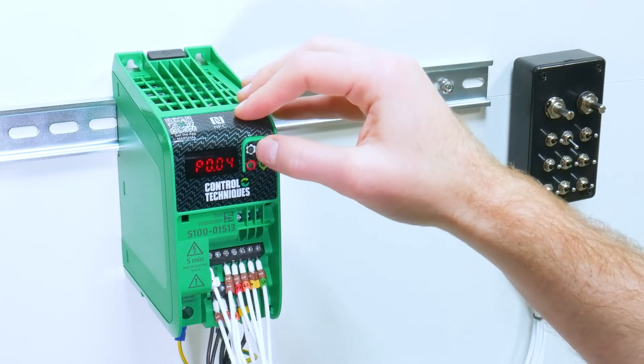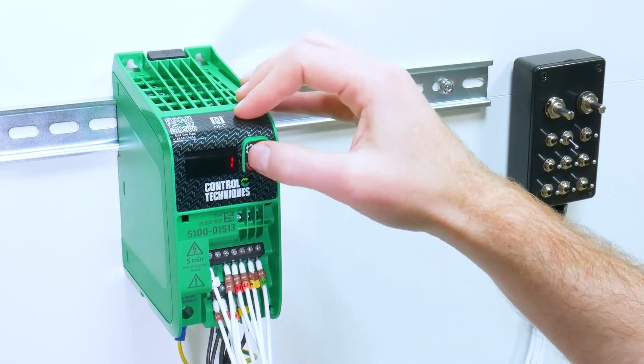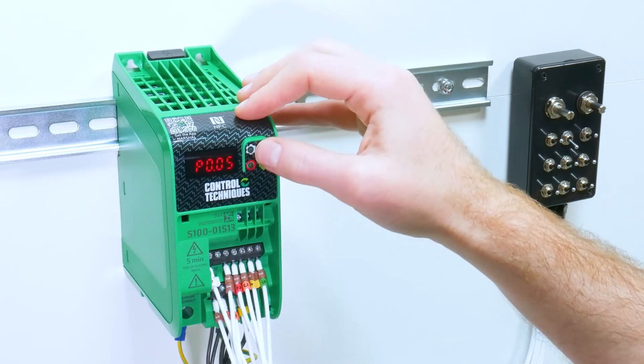Parameter 5 is our reference configuration. A setting of 1 means a local remote configuration where you have an analog input 1 and analog input 2 signal.